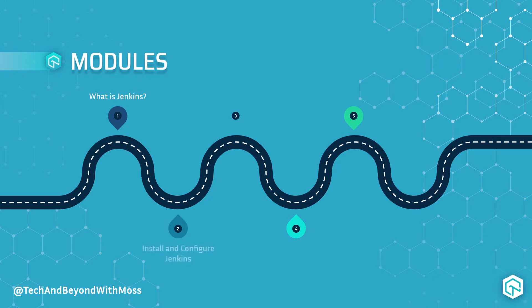After we have a high level understanding of Jenkins, we'll then install and configure Jenkins on our local machine. Once we've done that, we'll install and configure the Maven plugin. And after we install the Maven plugin, we'll then learn how to integrate Jenkins and GitHub. I'll then show you how to schedule Jenkins builds using build triggers.